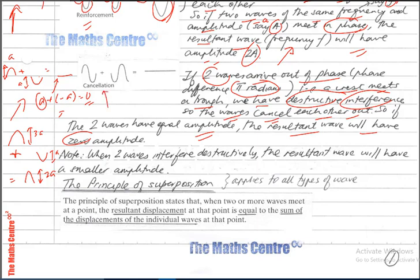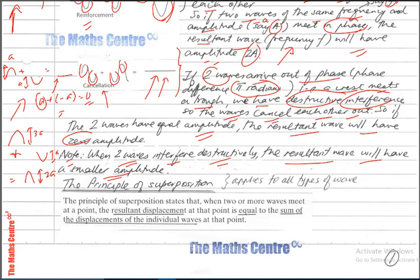Make sure you know the word cancellation. When two waves interfere destructively, the resultant wave will have a smaller amplitude. For example, a peak of amplitude 3a meeting a trough of amplitude a gives a resultant displacement of 3a + (−a) = 2a, so you get a resultant wave with a smaller amplitude.